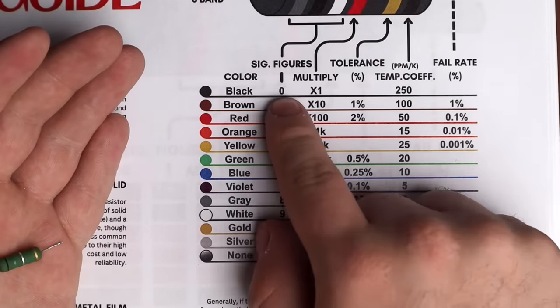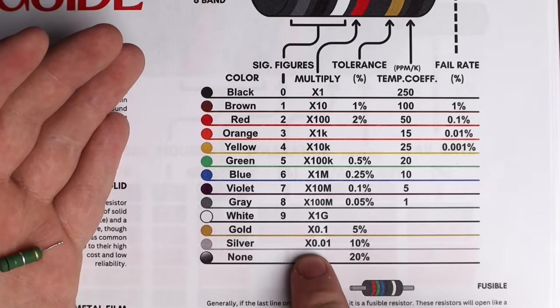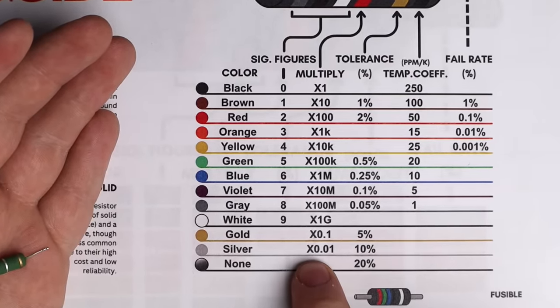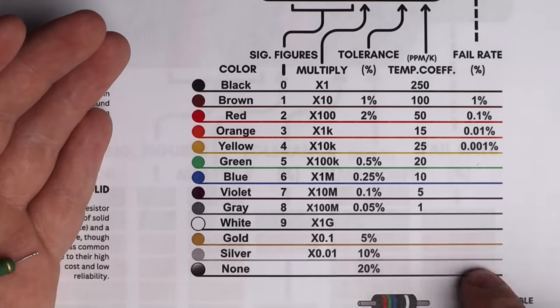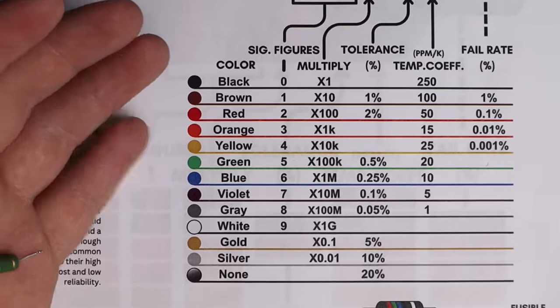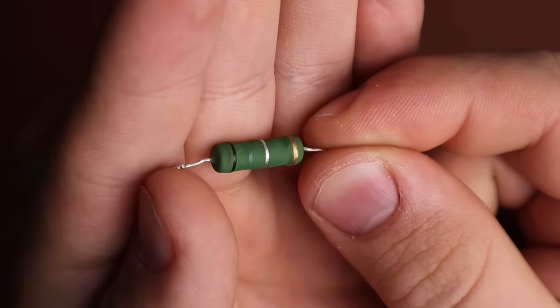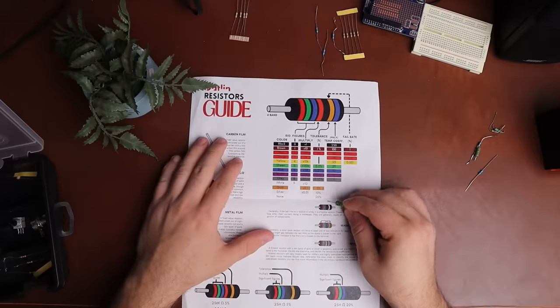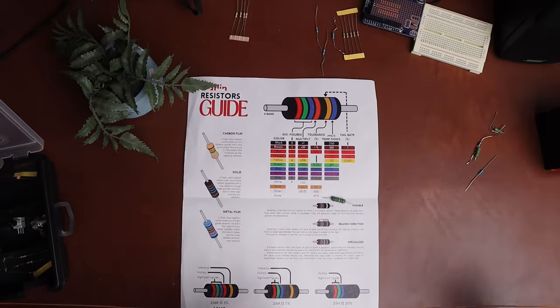We've designed our own color decoder and we've included it in our resistor guide linked below. In this example, we have black, green, silver and finally gold. Using our decoder, we can see that black is zero, green five and silver a multiplier of 0.01. Finally, gold is a tolerance of 5%. So we just do a simple multiplication, 5 times 0.01 tells us that this is a 0.05 ohm resistor with a 5% tolerance.